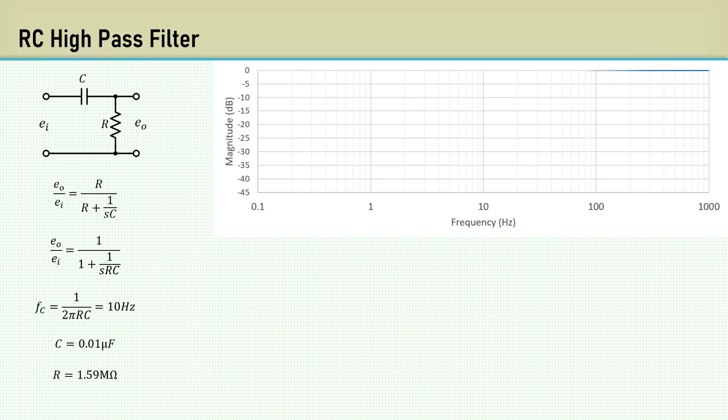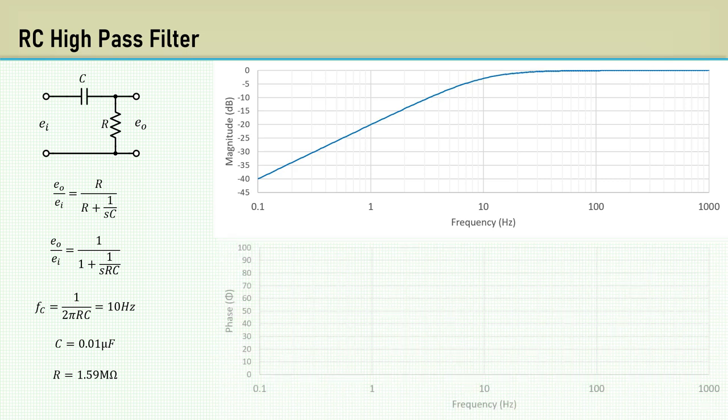Here's the magnitude response. The minus 3 dB point is at 10 hertz, and the slope is 20 dB per decade. Here's the phase response.